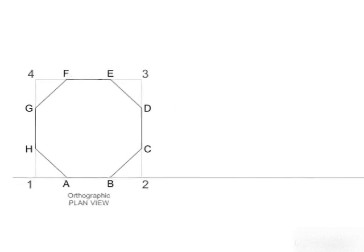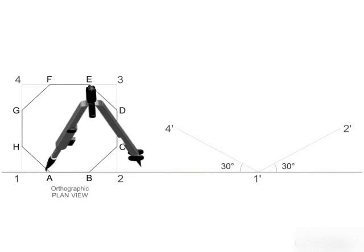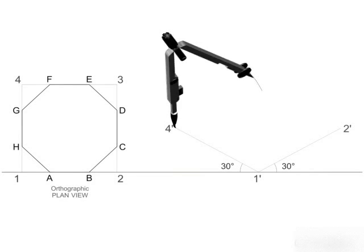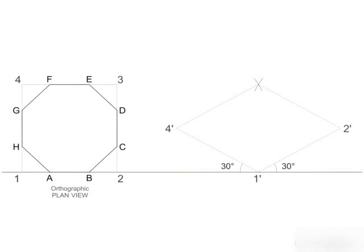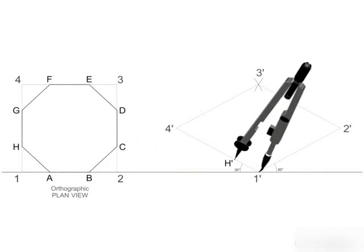From any point 1 dash on a reference line, draw two isometric axes 1 dash 2 dash and 1 dash 4 dash equal to sides 1-2 and 1-4 and making angles of 30 degrees with XY.